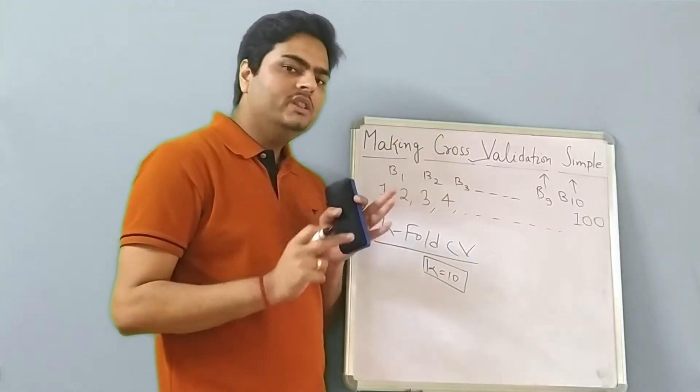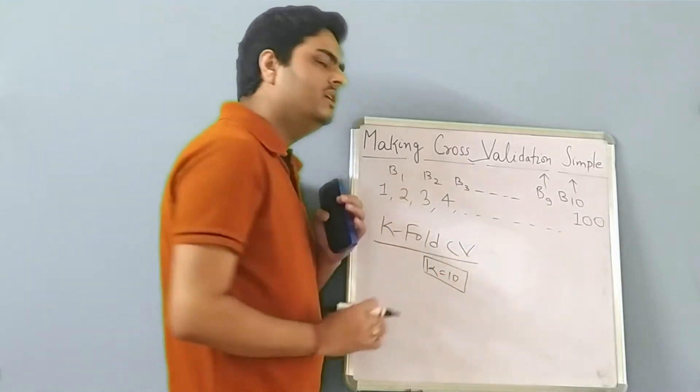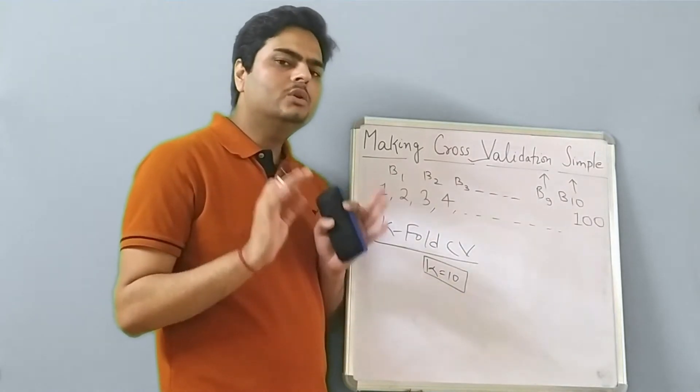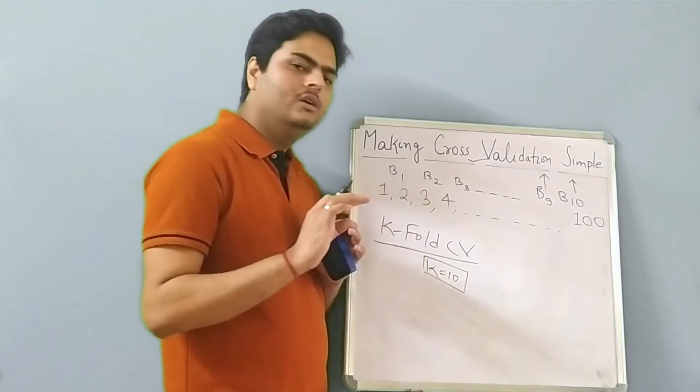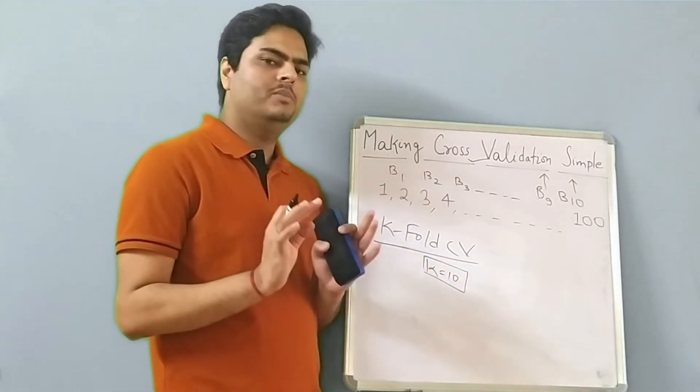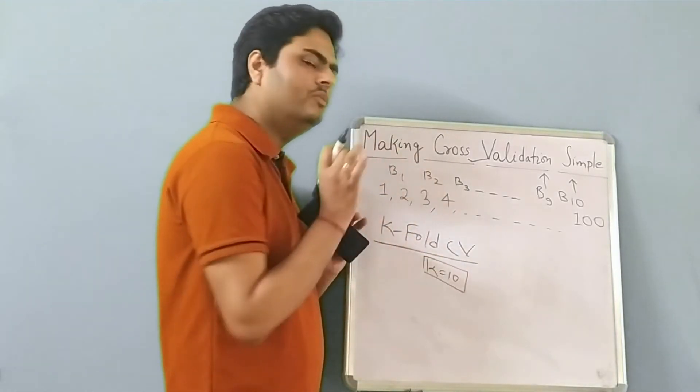Also, when this process is repeated many times, I talk about 10 iterations here, then your model's variance will come down. That is the good thing about K fold cross validation. Typically, we keep the size of K as 10. This approach we take in many times, many machine learning, deep learning models. So it is very important for you to understand how K fold CV works.